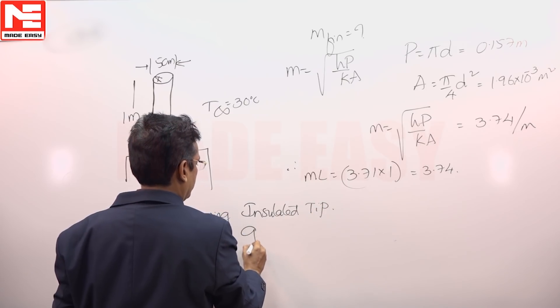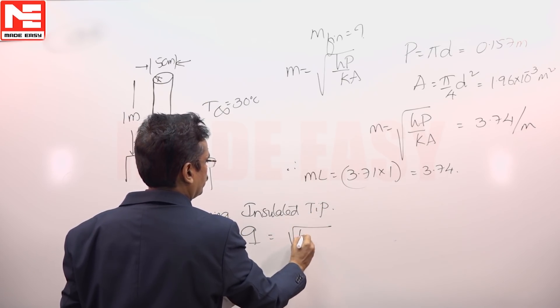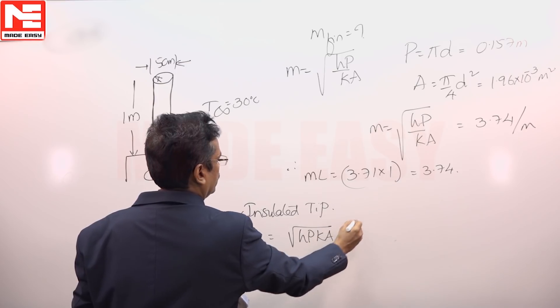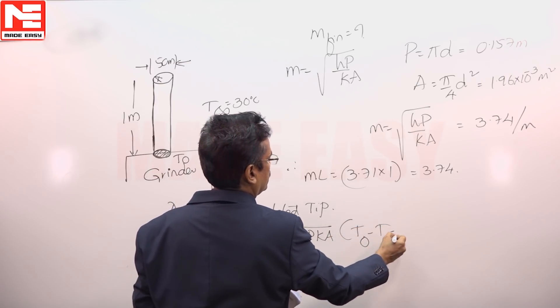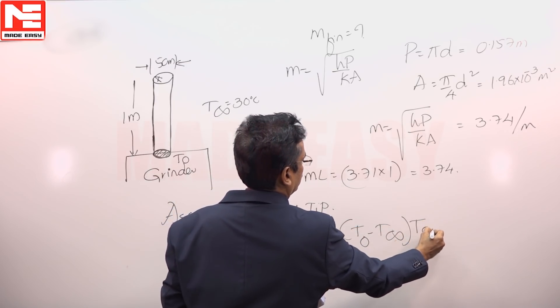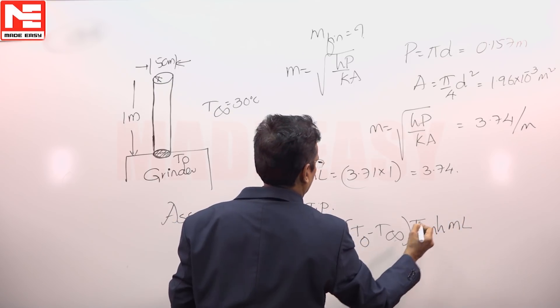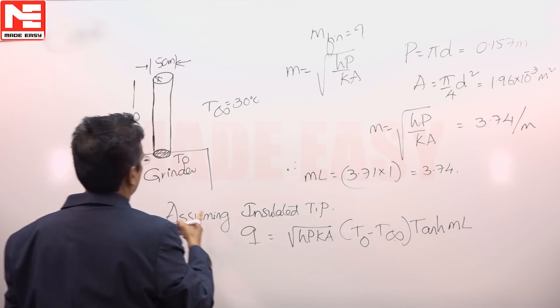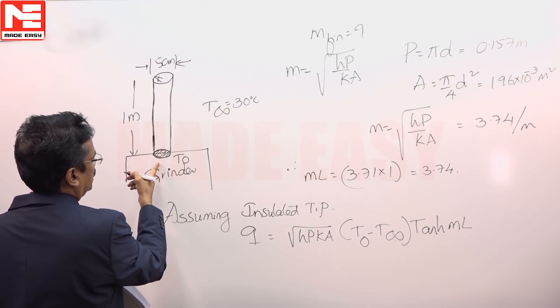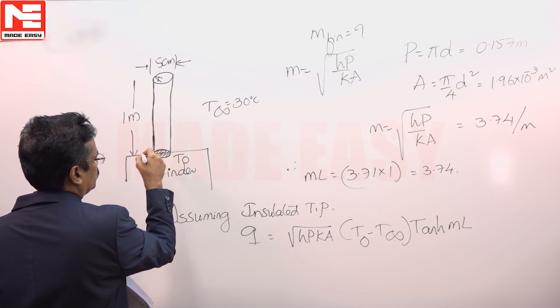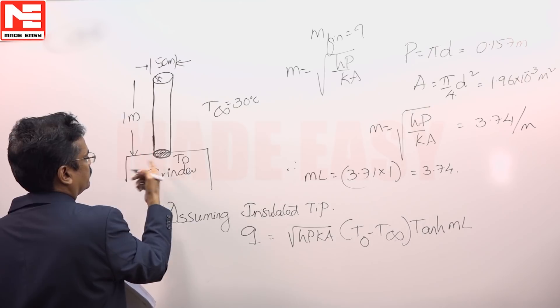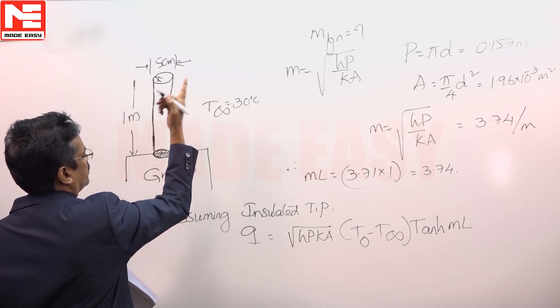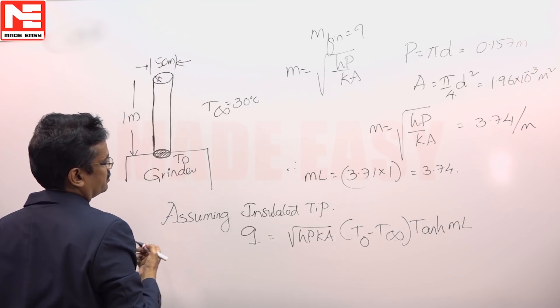The heat dissipated is equal to √(HpKA) × (T₀ - T∞) × tanh(ML). Here, the assumption is for steady state conditions of the grinder. All the mechanical work which gets converted into heat because of that grinding will get dissipated by heat. That is for the steady state conditions of the fin.